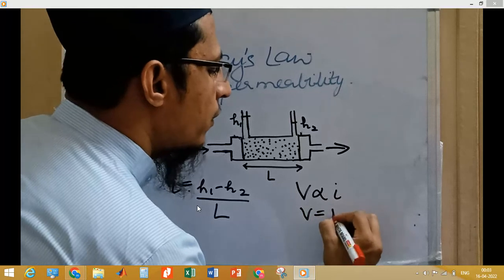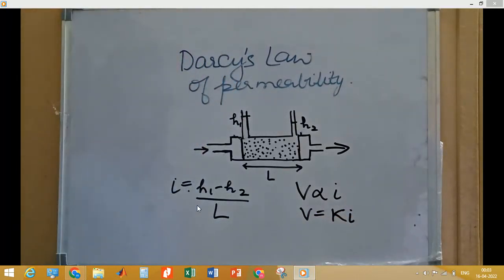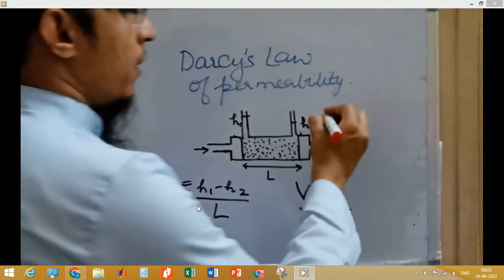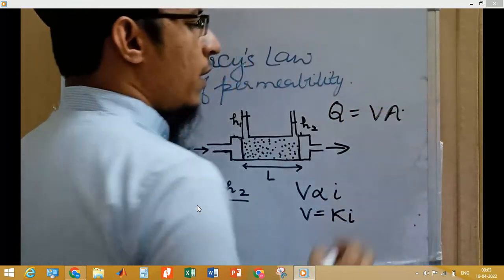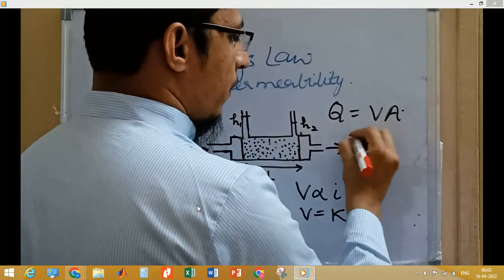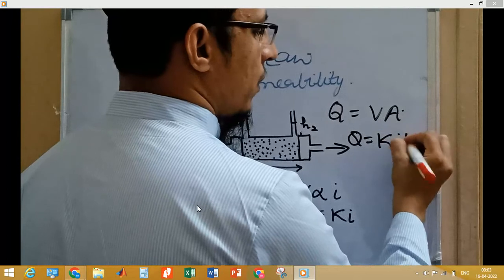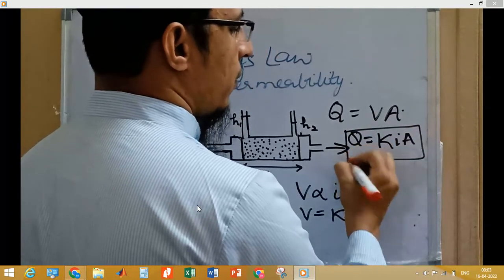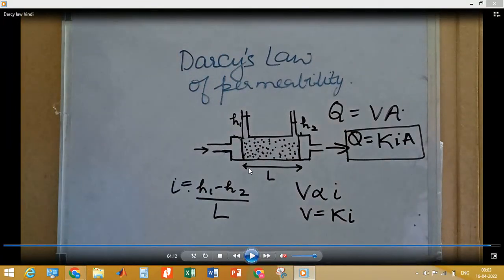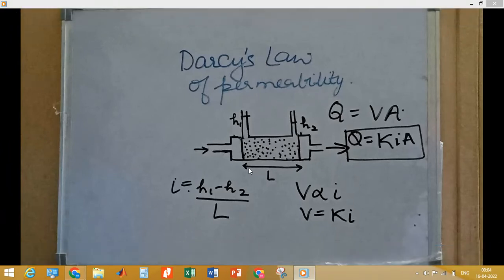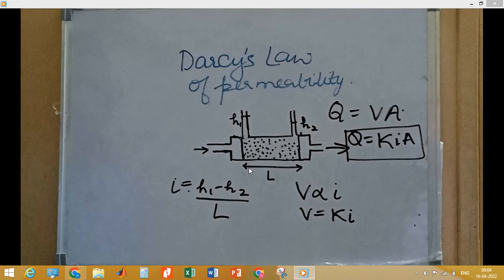We can replace the proportionality with a constant k, which is defined as the permeability of soil — the ease with which fluid can pass through a soil sample. Depending on the situation, we may require soils that allow fluid to flow easily, or soils that can hold fluid for a period of time. Knowing the permeability of soil allows us to select the appropriate type of soil for different requirements.